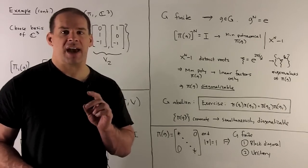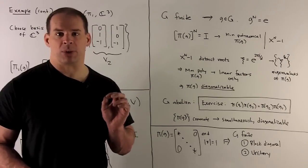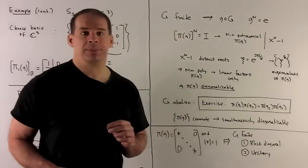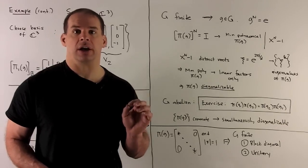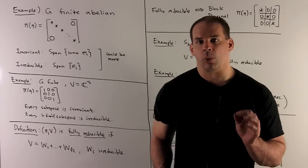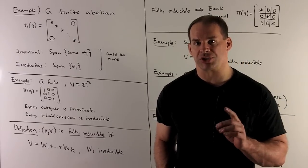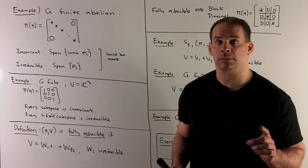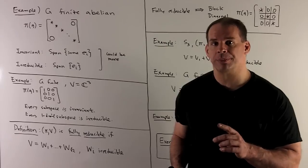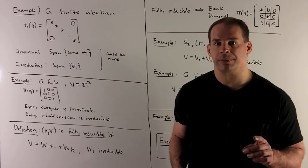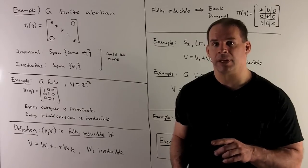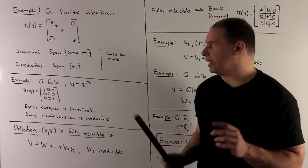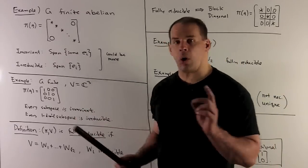What do we want to generalize this to? If I just have G finite with a finite-dimensional representation, we're looking for a basis that's going to put all of our matrices into block-diagonal form simultaneously, and we'll want those blocks to all be unitary. What does our result about finite abelian groups say about invariant and irreducible subspaces? If we take any collection of basis vectors from our diagonalizing basis and take their span, that gives us an invariant subspace. If we take any one basis vector and take its span, that gives us an irreducible subspace. In any event, the irreducibles are always going to be one-dimensional.